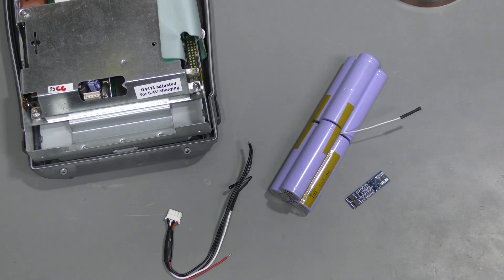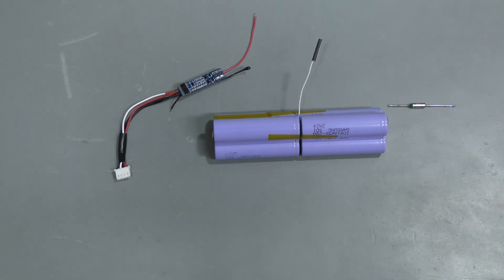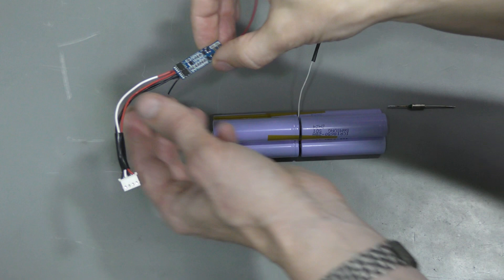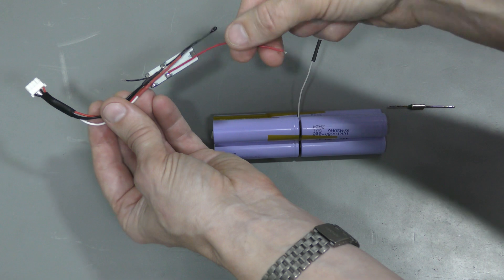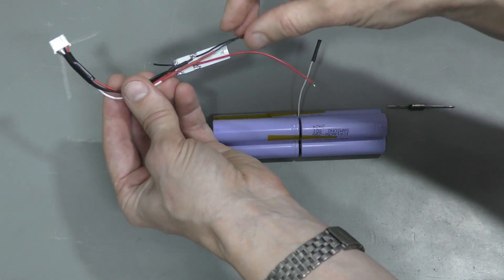I prepared the wiring here. This is the negative of the pack, positive of the pack. This pad is the center tap. This is the temperature sensor.